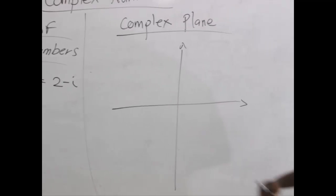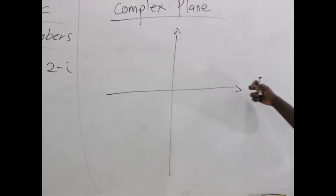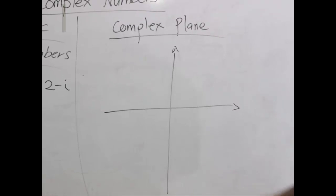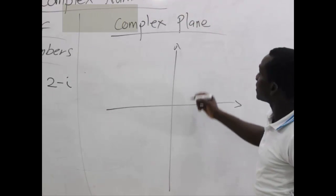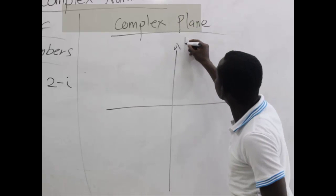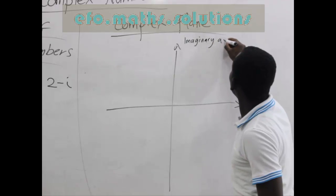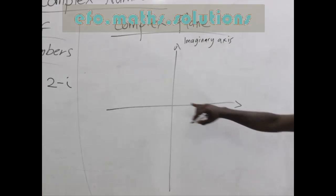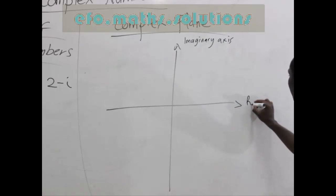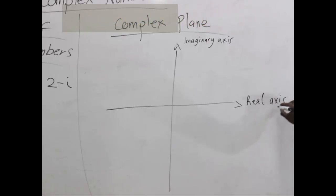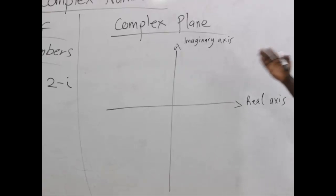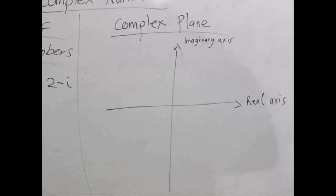If it were a normal Cartesian plane, we would label this the y-axis and this the x-axis. But for complex numbers, we label the vertical axis as the imaginary axis and the horizontal as the real axis. So we plot the imaginary aspect against the real aspect of the complex number.